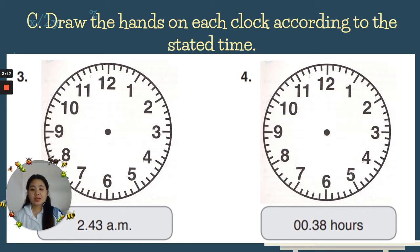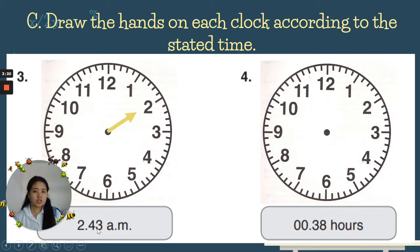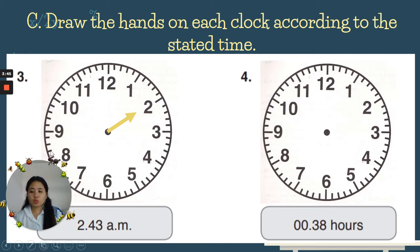Number three: the time is 2:43 AM. The hour is two, so that is the small hand. The minutes is 43 — five, ten, fifteen, twenty, twenty-five, thirty, thirty-five, forty, forty-one, forty-two, forty-three. So that is the long hand. The time is two forty-three AM.